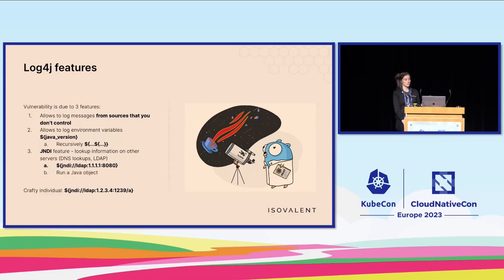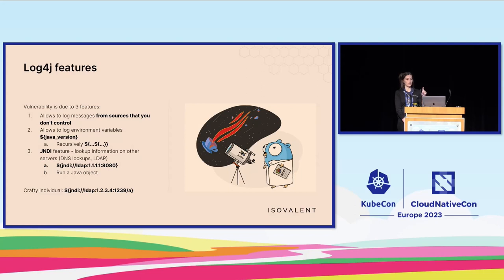What's interesting is that it allows you to do that recursively. So if the Java version string itself contains another dollar-sign curly-brace expression, it will actually resolve that and log it as well.